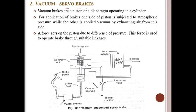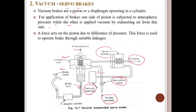Now we will discuss vacuum or servo brakes. Vacuum brakes use a piston or diaphragm operating in a cylinder. For brake application, one side of the piston is subjected to atmospheric pressure while the other side has vacuum created by exhausting air. The force from this pressure difference is used to operate the brakes through a suitable linkage. The diagram shows the control unit, atmosphere, brake pedal, brake fluid, vacuum reservoir, non-return valve, inlet manifold connection, brake, and servo cylinder.